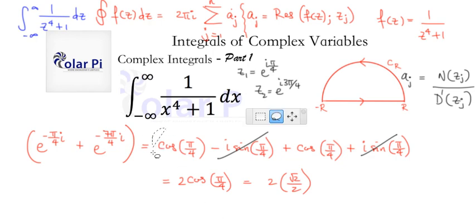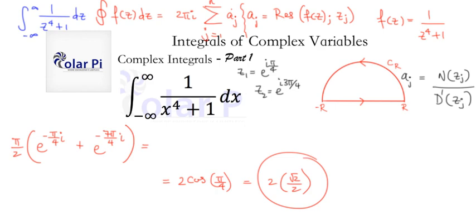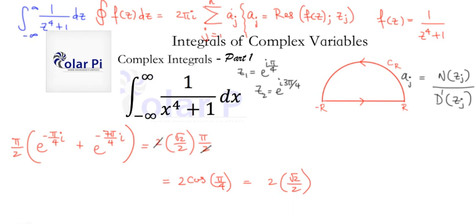Remember, we had a π/2 out front, so all we have left to do is multiply 2·(√2/2) by π/2. The 2's cancel, and we get π·√2/2 as our final answer. So our final answer, written bigger, is π√2/2.